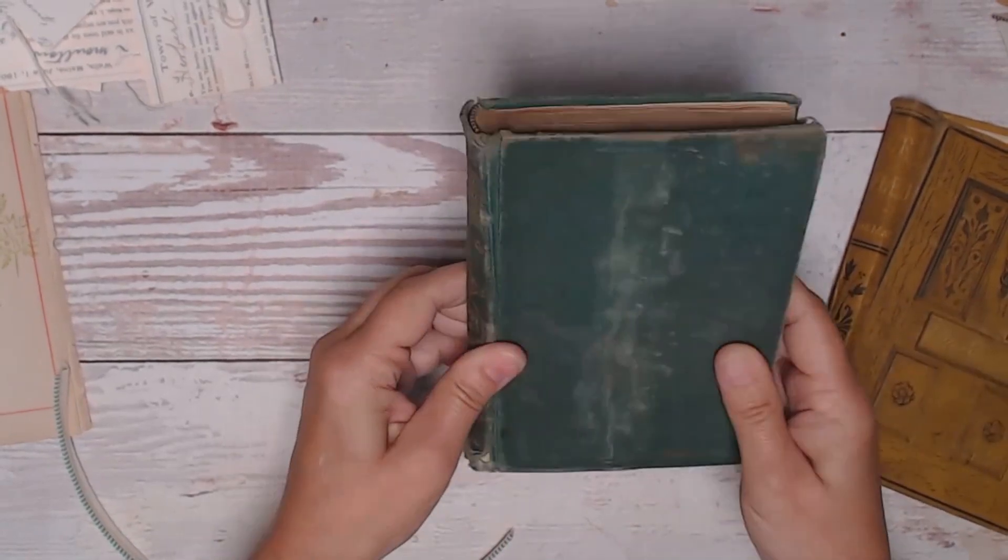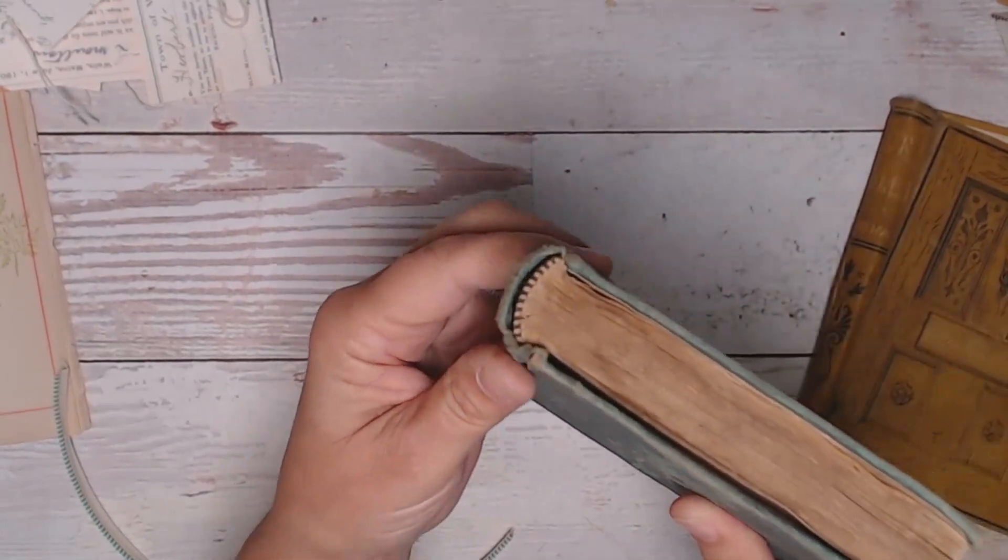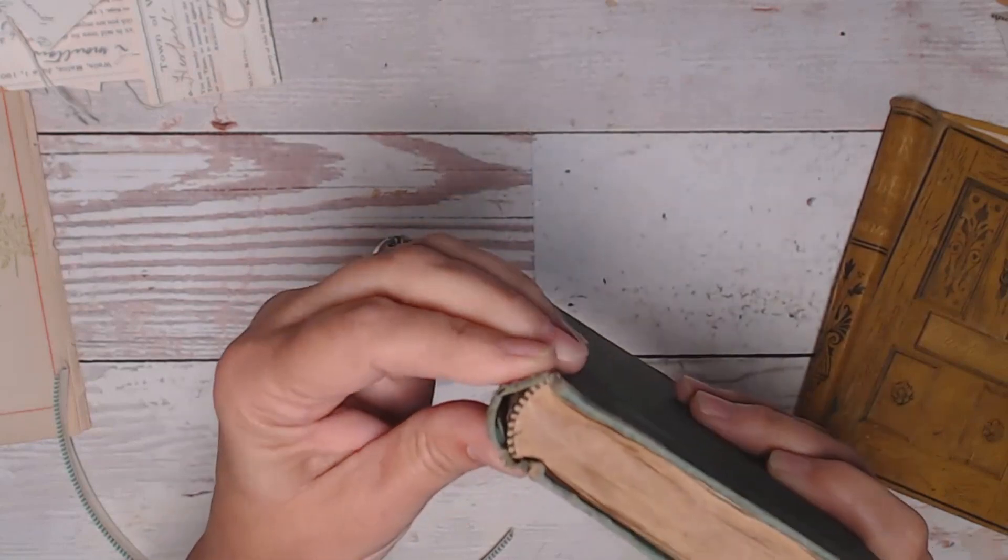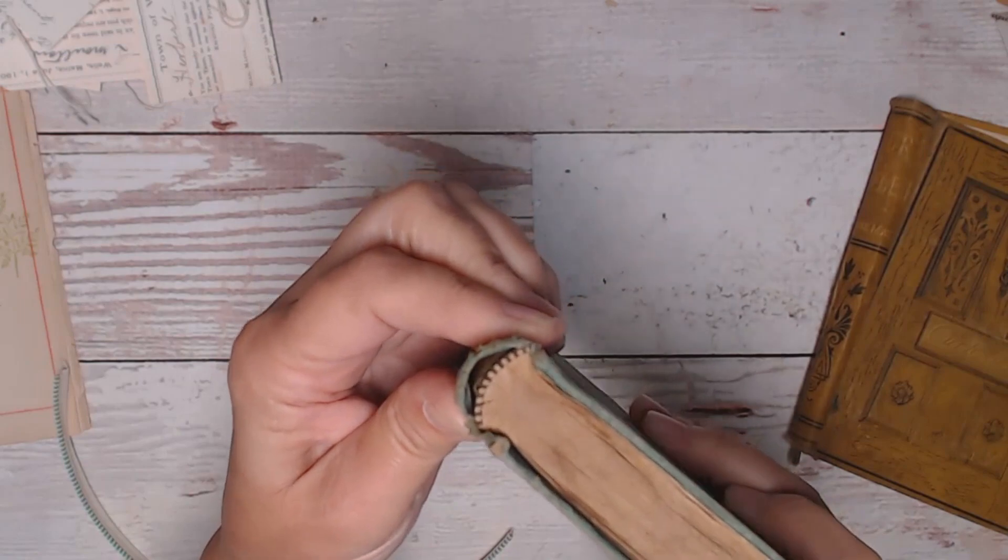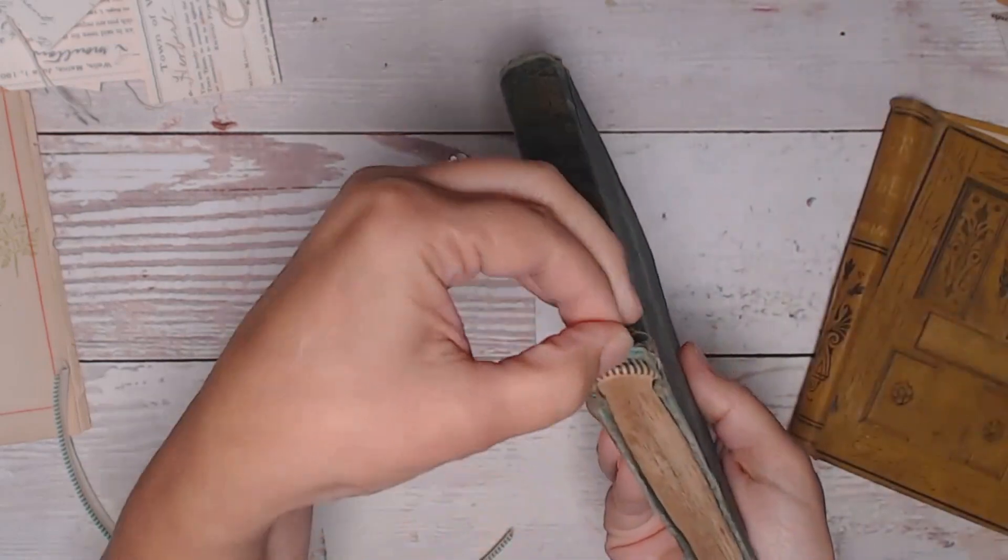Here's a really old book from the 1800s that has a headband. So you can do it on rounded spines as well and this one also has a tail band.